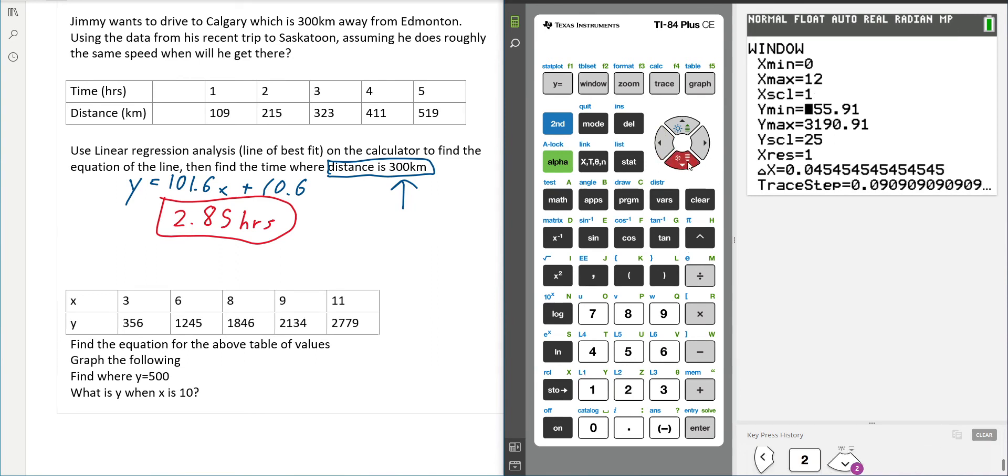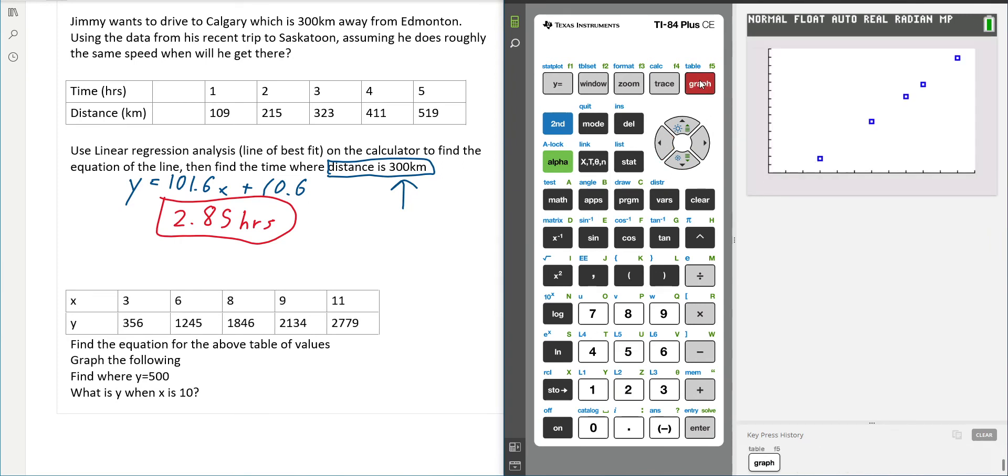And then you can just adjust your window to match. So we want this to start at zero. We want this to actually go all the way to 12 it looks like. Going up by one is fine. Start at zero. And then looks like we can probably just end right at 3000. Maybe go up by 100. That might not be enough. Maybe 200.